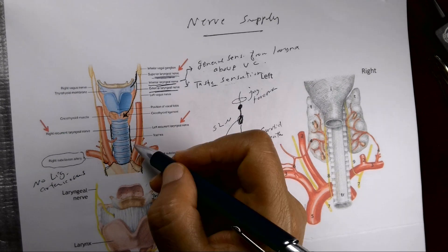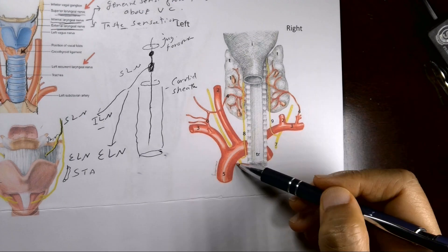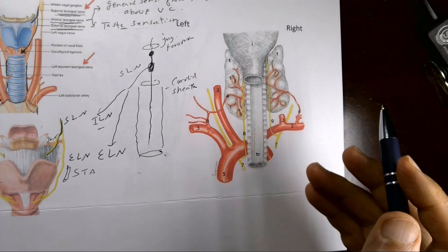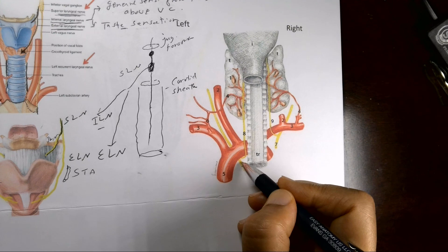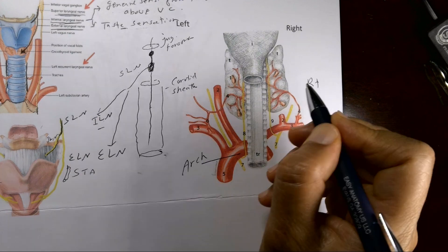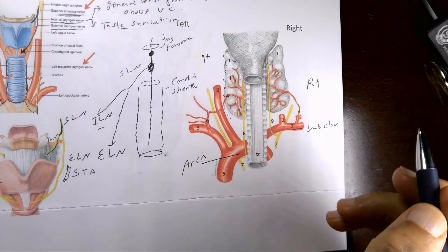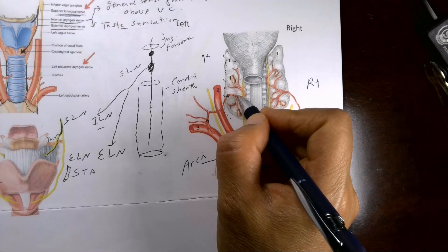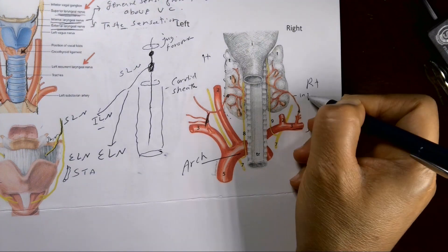The recurrent laryngeal nerve ascends behind the thyroid gland. The artery that comes close to the nerve at the thyroid gland is the inferior thyroid artery, with its inferior laryngeal branch, coming from the thyrocervical trunk.